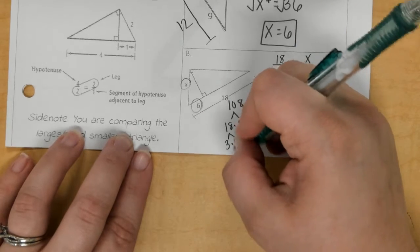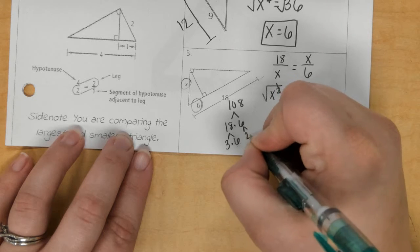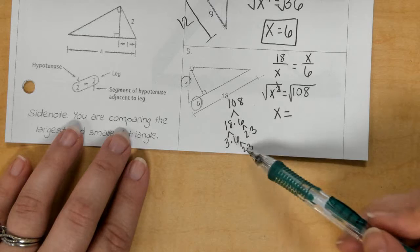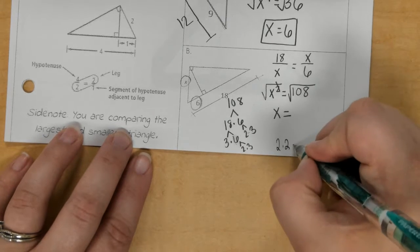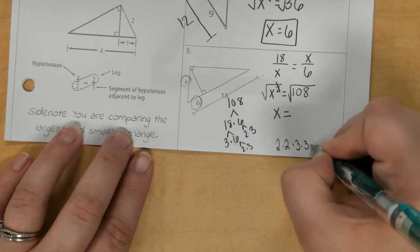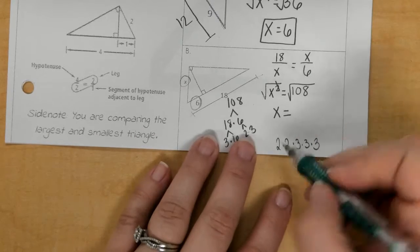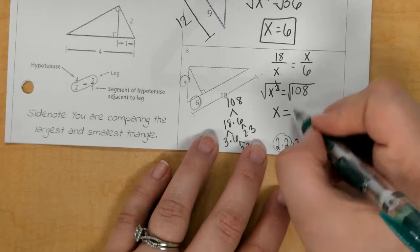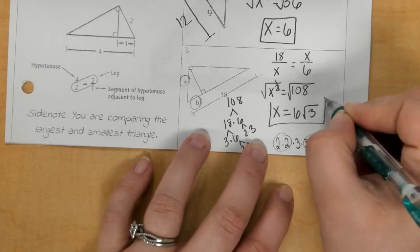So, 3 times 6. So, it looks like I've got 1, 2, 2's. 3, 3's. So, I've got a pair of 2, a pair of 3's. 2 times 3 is 6. Leftover is a 3 that goes back inside.